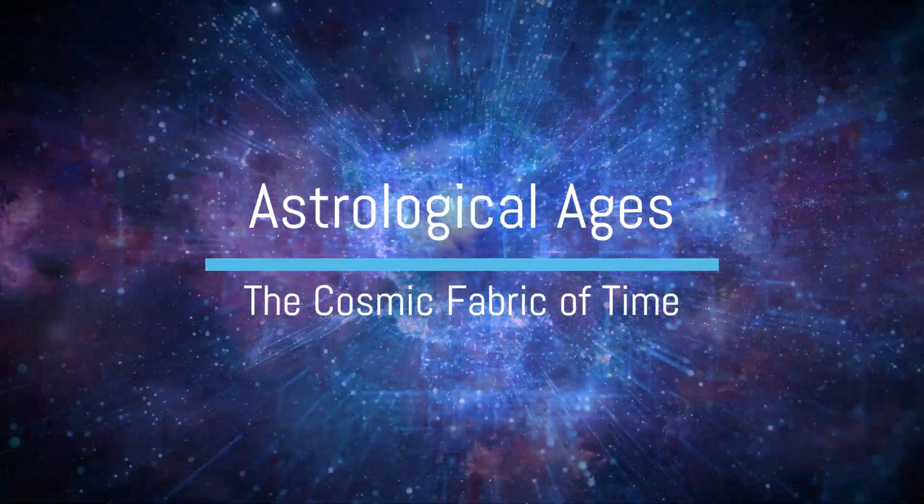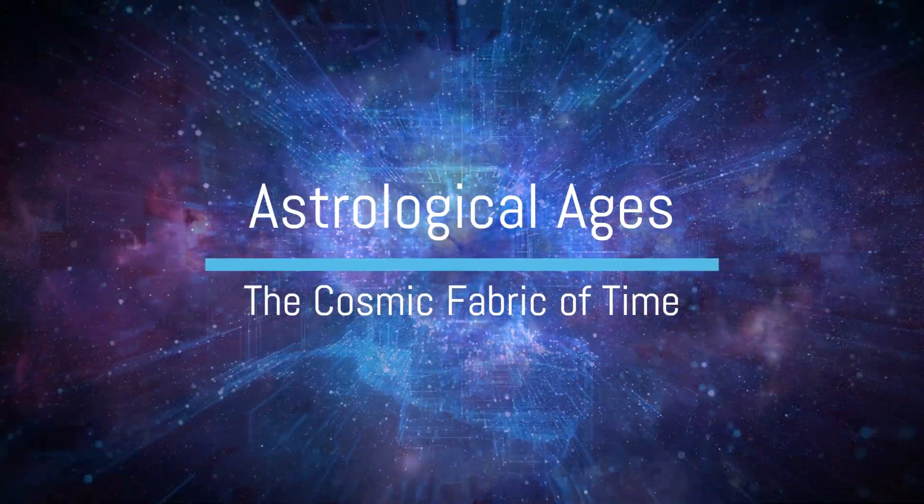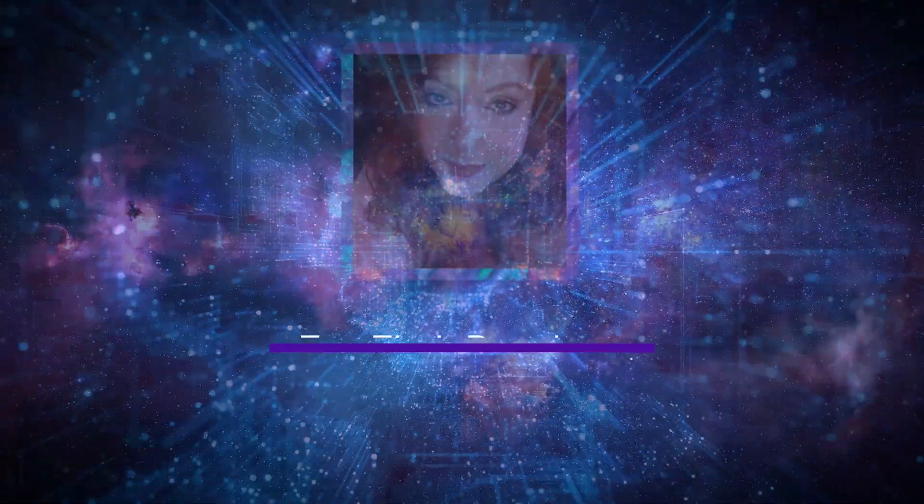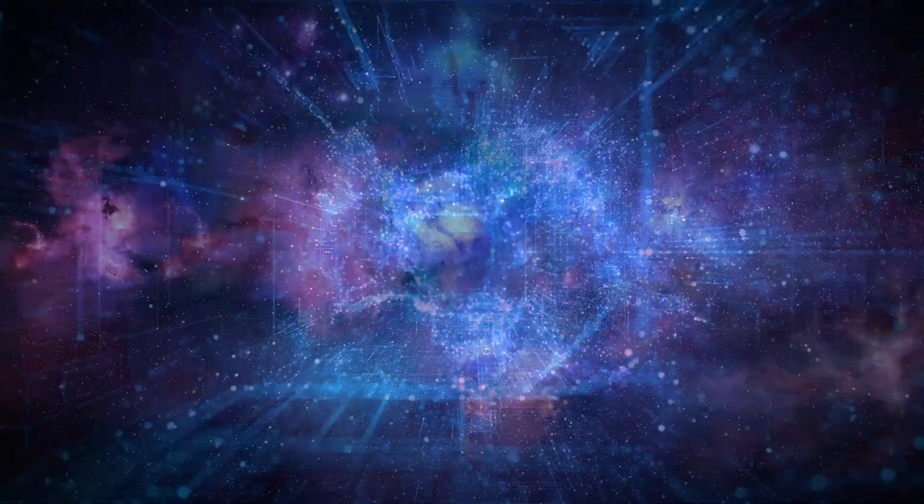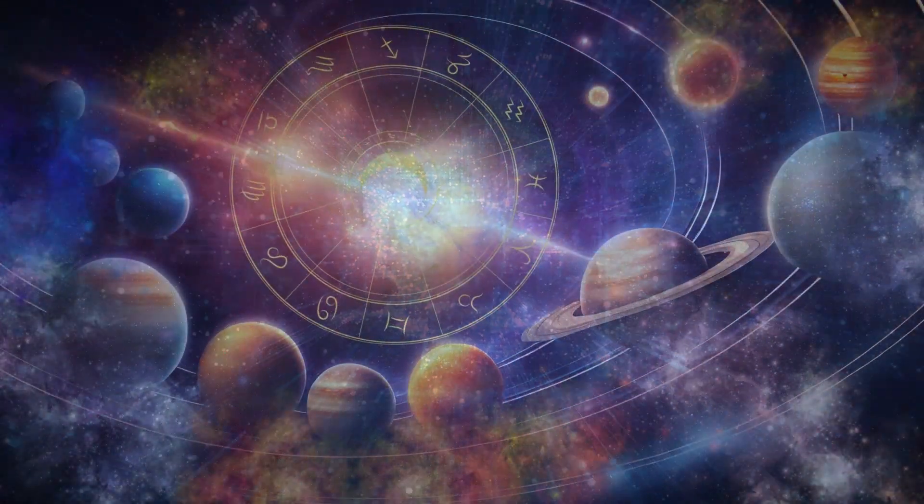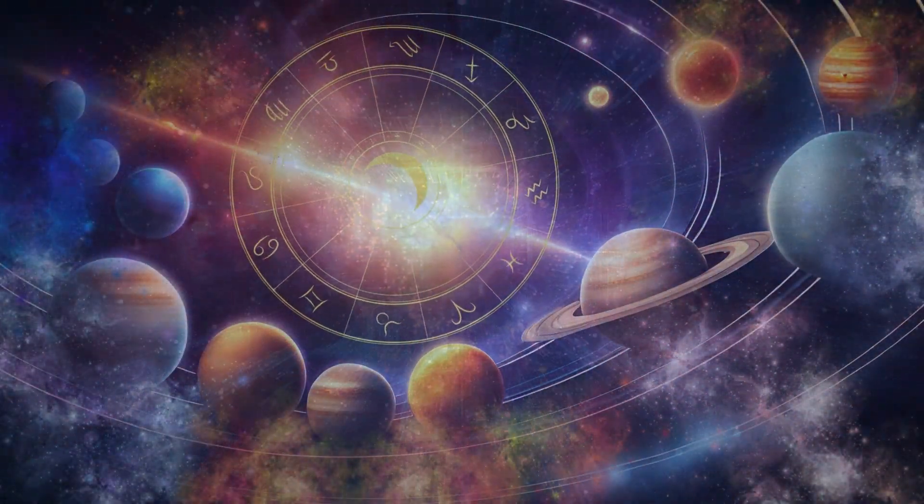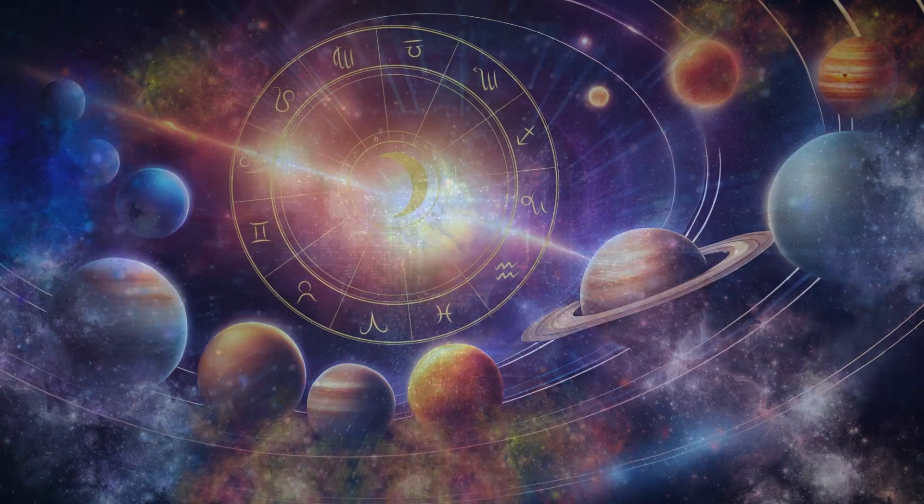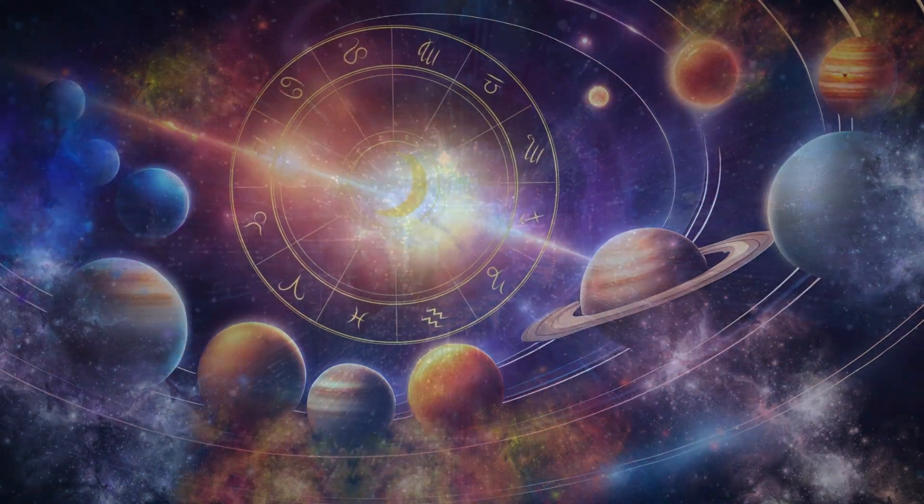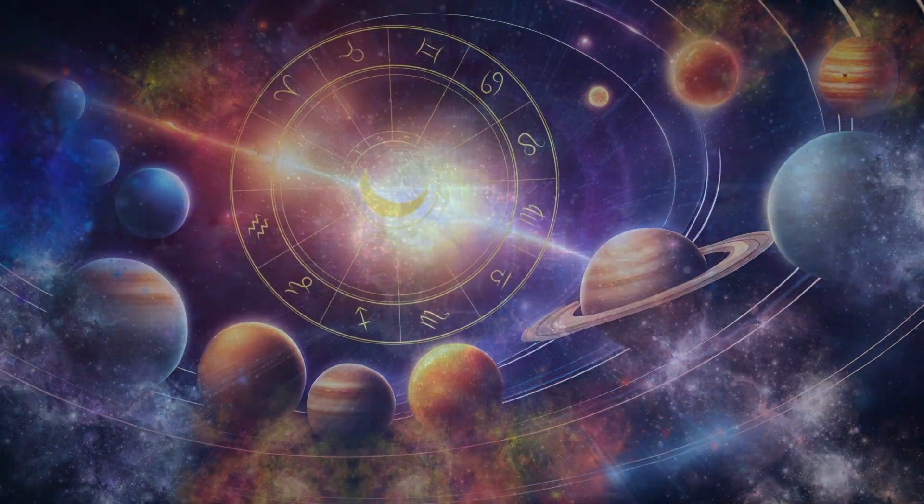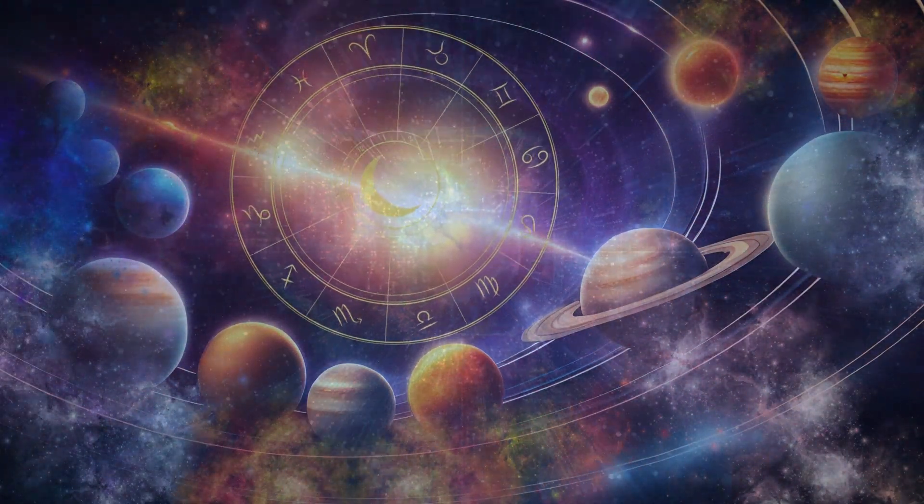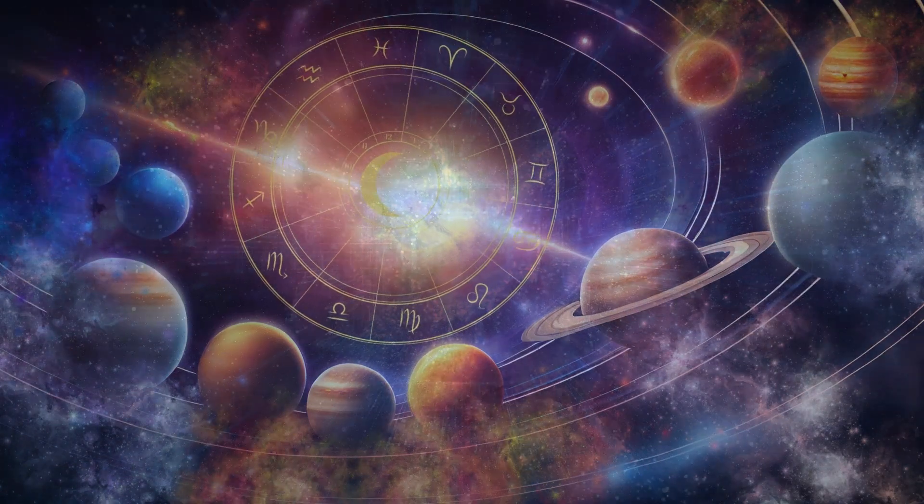Astrological Ages – The Cosmic Fabric of Time. In the vast expanse of the cosmos, the earth spins on its axis. While the sun and stars continue their cosmic dance, embedded within this celestial choreography is the concept of astrological ages, which weaves together time, astronomy and astrology.